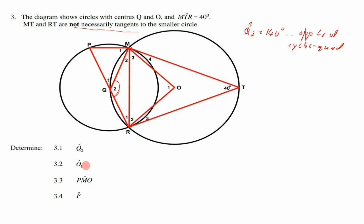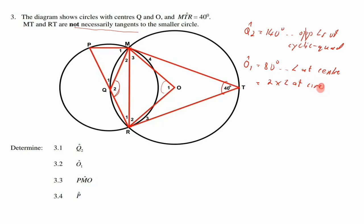For 3.2, find O1. O1 is subtended by chord MR at the center, while angle T is subtended by the same chord MR at the circumference. The angle at the center equals twice the angle at the circumference, so O1 = 2 × 40° = 80°.